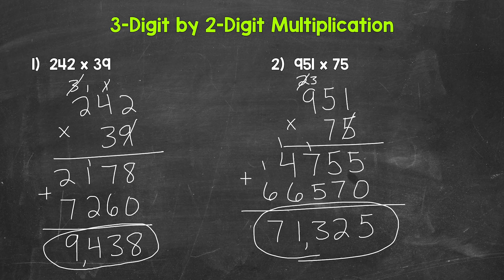Here are our answers. For number one, 242 times 39 equals 9,438. For number two, 951 times 75 equals 71,325.